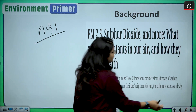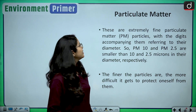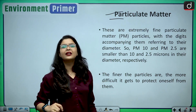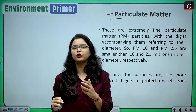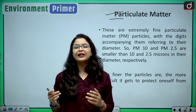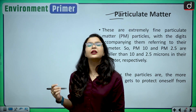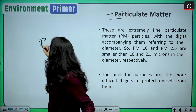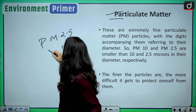The first and foremost air pollutant is particulate matter — we have discussed this in our very first episode on air pollution. Particulate matter consists of very small, fine particles, and the most famous ones are PM2.5 and PM10.